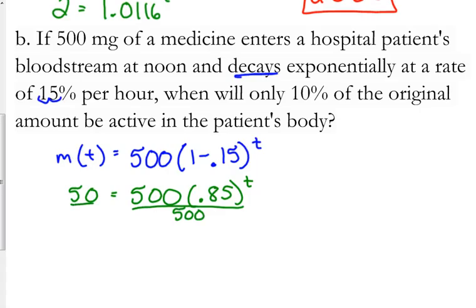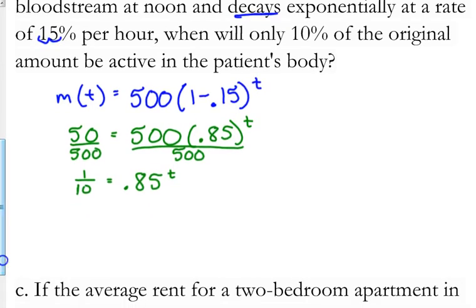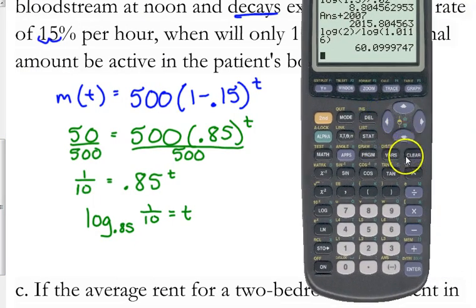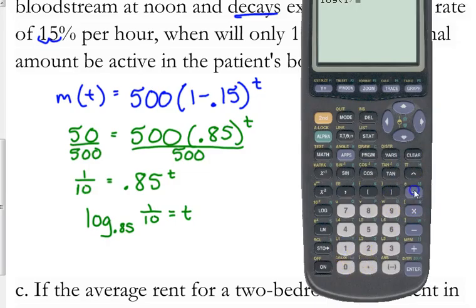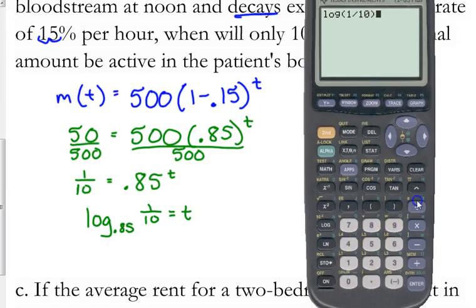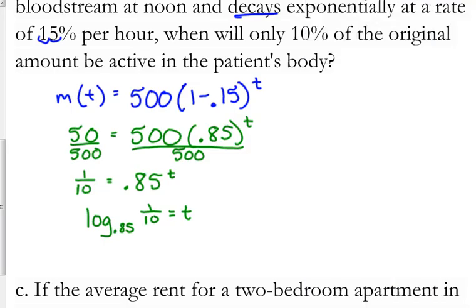1 minus 0.15 is 0.85. Divide both sides by 500. So 50 over 500 is 1 tenth. Write it in log form. The log base 0.85 of 1 over 10 is equal to T. 14.17 hours.